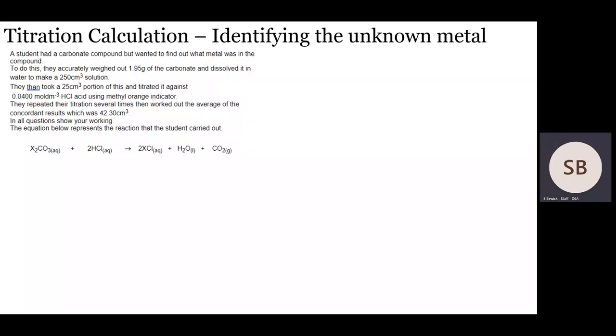One way they can make titration calculations quite a bit trickier is to give you an unknown compound. Normally it's the metal in the carbonate or the hydroxide that will be unknown, but they could easily do it with an unknown acid as well and make you work out what the acid is.